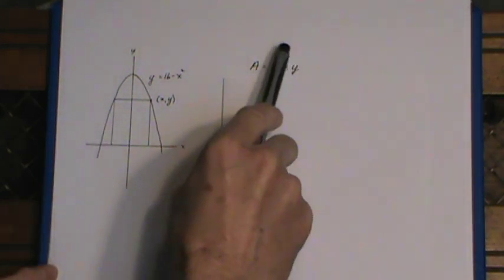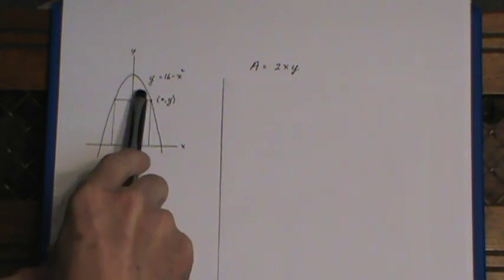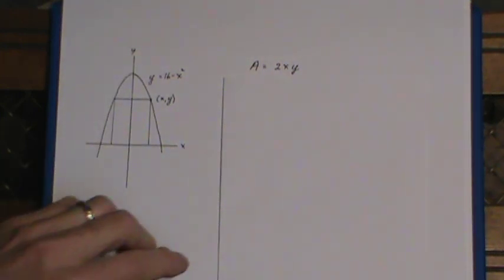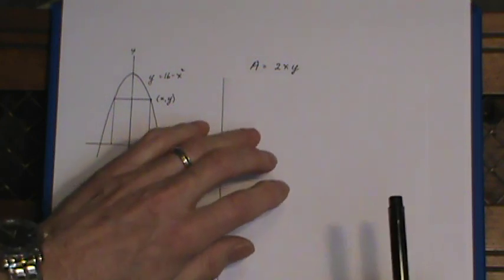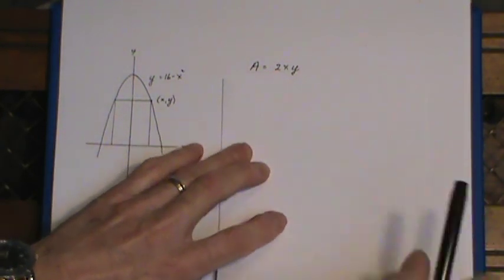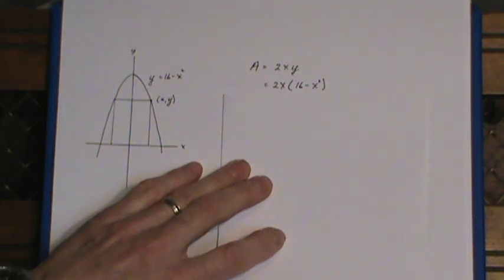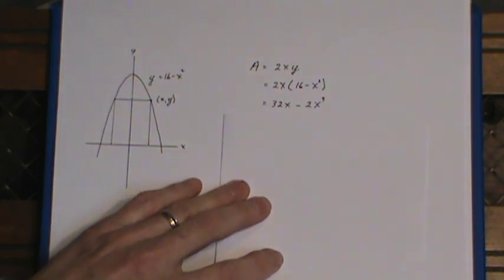Actually, you could just maximize xy because if this piece over here is at a maximum, then the whole thing would be at a maximum. Now, this is very easy to do because you have a substitution right here for y. Just put that in for the y value of 16 minus x squared and multiply it out.